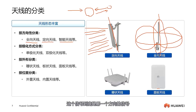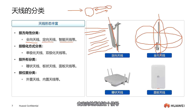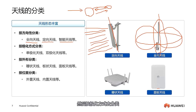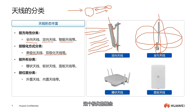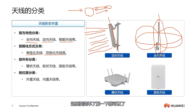Smart antennas are a special type. A smart antenna can receive signals omnidirectionally but transmits signals directionally. Because it incorporates certain algorithms, it can analyze signal characteristics, calculate from which direction the signal is coming, and then use beamforming to direct transmission — omnidirectional reception and directional transmission.